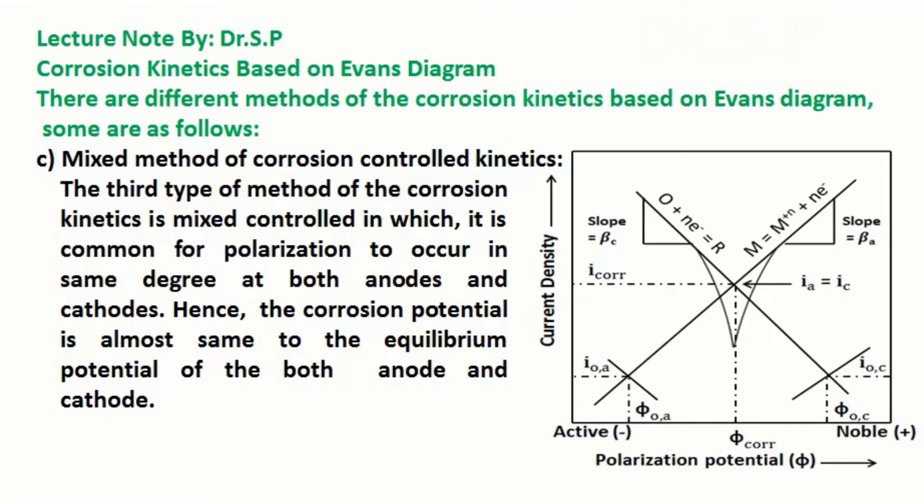The third type of method of the corrosion kinetics is mixed controlled, in which it is common for polarization to occur in same degree at both anodes and cathodes.